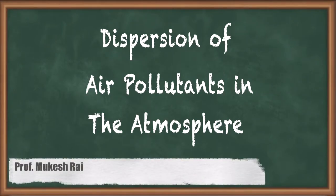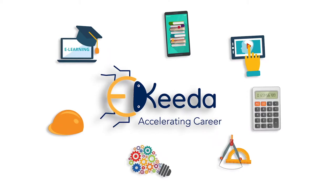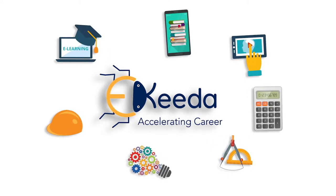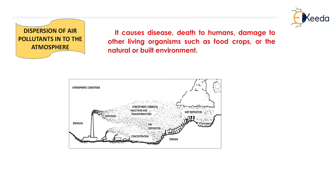Hello students, today we are going to discuss the dispersion of air pollutants in the atmosphere. The dispersion of air pollutants causes diseases to humans and damage to other living organisms such as food crops, or the natural or built environment.